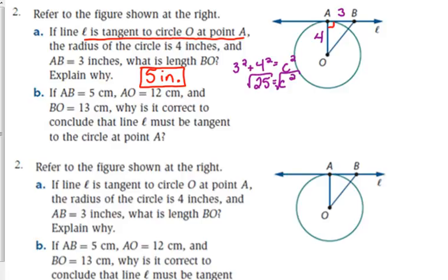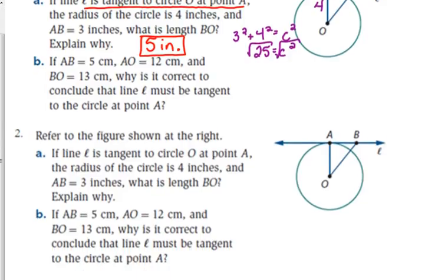Part B. Same figure, just different conditions. If AB is five centimeters. So we'll label AB with five centimeters. AO is 12 centimeters. And BO is 13 centimeters. Why is it correct to conclude that line L must be tangent to the circle at point A? So notice this question started a little bit different. This question didn't tell us that line L was tangent to the circle. We can't use what they said in part A. Part B is completely different. They just start by giving us lengths.